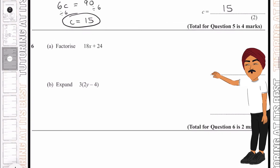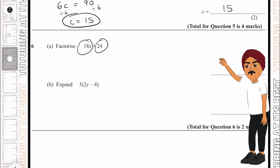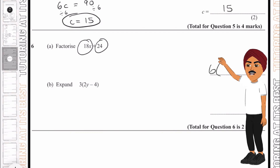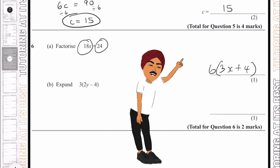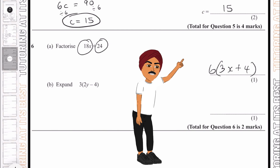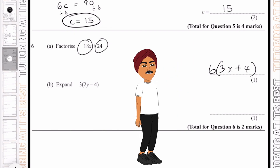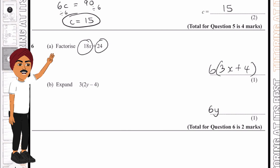Question 6a: factorize 18x + 24. We find that 6 is common between both numbers — 6 times 3x is 18x and 6 times 4 is 24. This also tests your multiplication and division skills, knowing which numbers divide without a remainder. For part b, expand 3(2y − 4): 3 times 2y is 6y, and 3 times minus 4 is minus 12, giving 6y − 12.